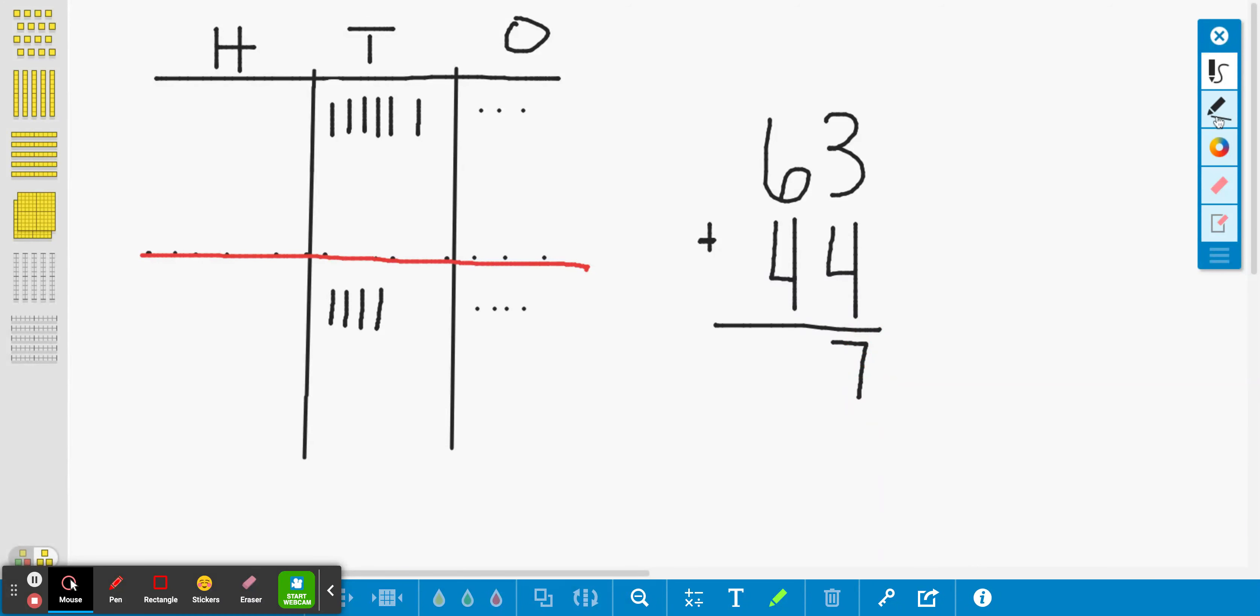And if I want, I can actually put a little X up here. And this just reminds me that I didn't have to put a one because I didn't circle ten ones and make a new ten because I don't have ten ones. I only have seven ones.